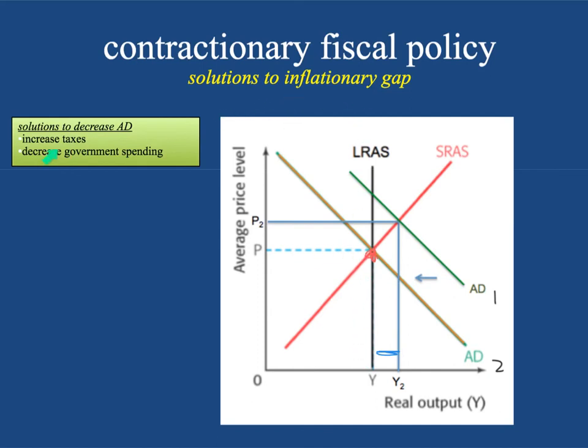So those are the solutions: increased taxes and decreased government spending, and here's how you would show it on a graph. You now understand what contractionary fiscal policy is and how to show it on a graph — contractionary fiscal policy is the contracting of aggregate demand to return to a realistic and sustainable general output level of P and Y. I hope you found this video on contractionary fiscal policy to be helpful. We'll talk to you in a bit.